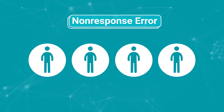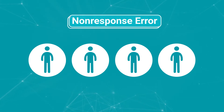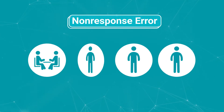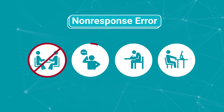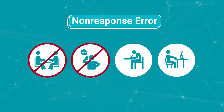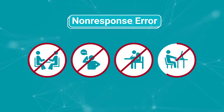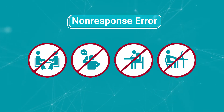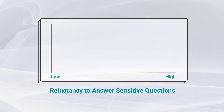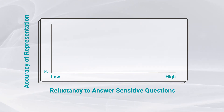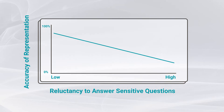Non-response error happens when selected individuals choose not to participate, whether in person, on the phone, in writing, or online. Additionally, some GSS respondents are reluctant to answer personal or sensitive questions, which can reduce the accuracy of the representation in the data.